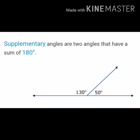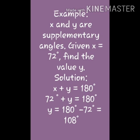We will study supplementary angles with the help of an example. X and Y are supplementary angles. X is given as 72 degrees and we are asked to find Y. X plus Y equals 180 degrees. So 72 degrees plus Y equals 180 degrees, therefore Y equals 180 minus 72, which gives us 108 degrees. 72 degrees plus 108 degrees comes to 180 degrees, which measures a supplementary angle.